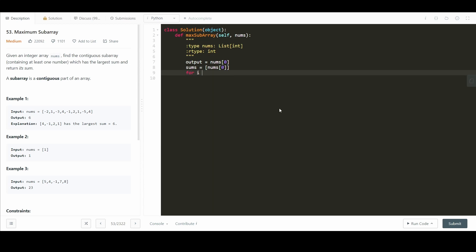Now for i in range 1 to length of nums. We get our num here so it's nums at i. Now we run our algorithm.